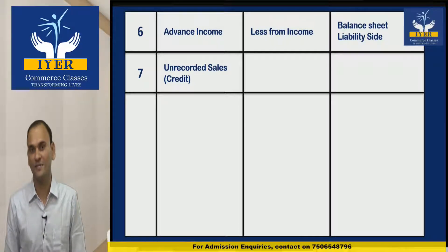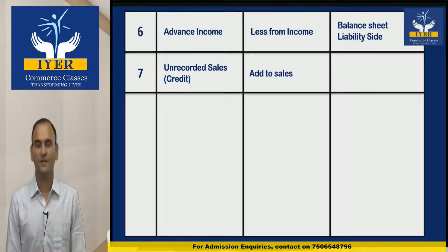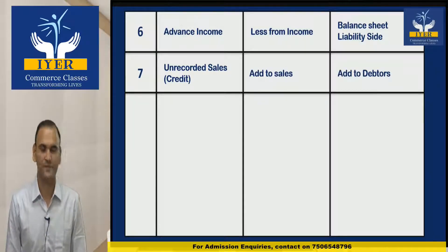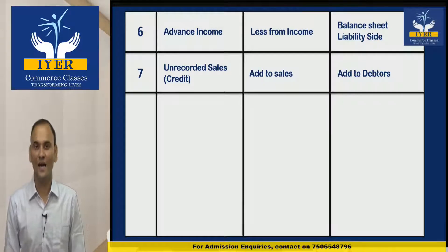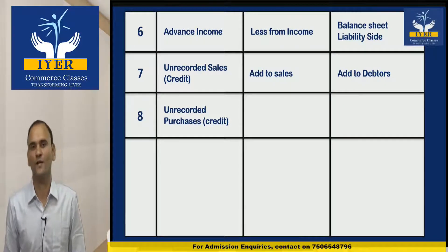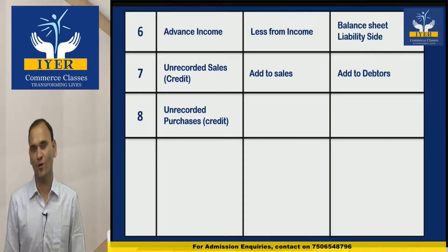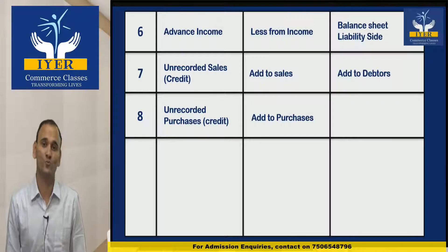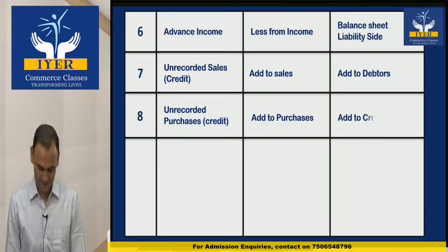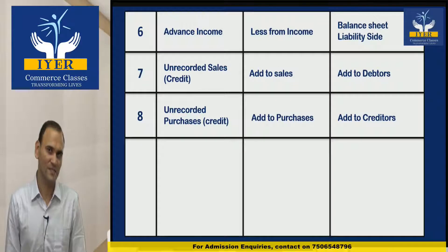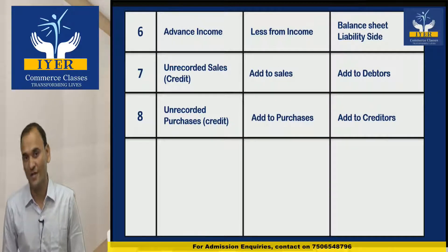The next adjustment is Unrecorded Sales. The two effects are: add to sales, and add to debtors. The next is Unrecorded Purchases, and the two effects are: add to purchases, and add to creditors.